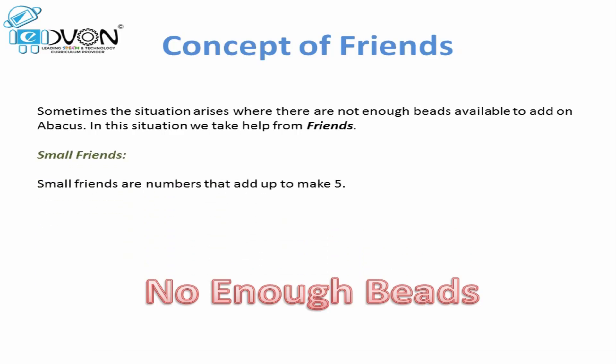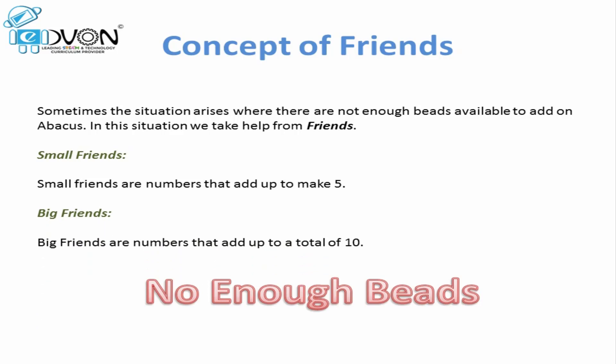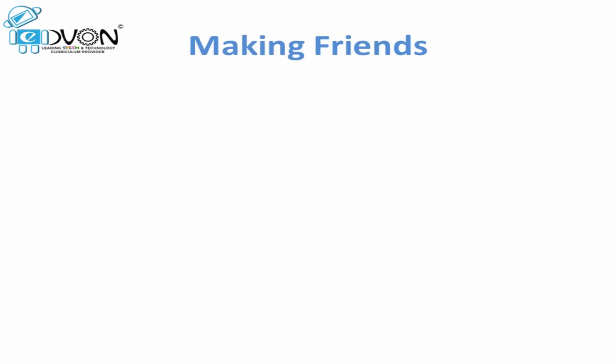Numbers that add up to make ten are called big friends, or house of ten. Let's learn how friends are made on abacus. Small friends, or house of five, are numbers that when added together they make five.